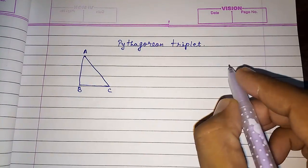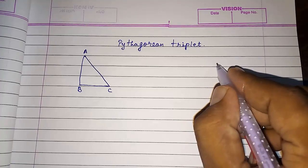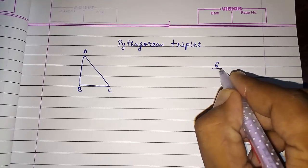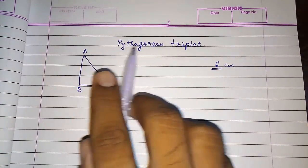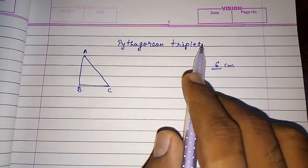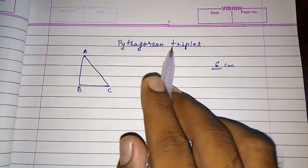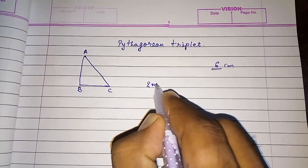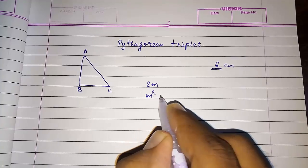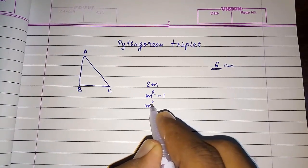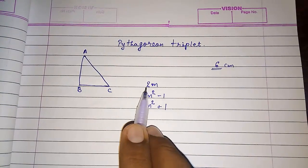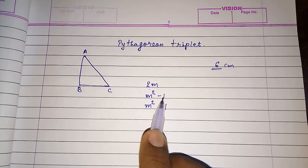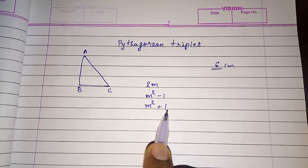In a Pythagorean triplet, if one side is given — suppose one side is six centimeters — you can find the other two sides. There are three terms or formulas to find the three numbers: the first is 2m, the second is m squared minus one, and the third is m squared plus one.